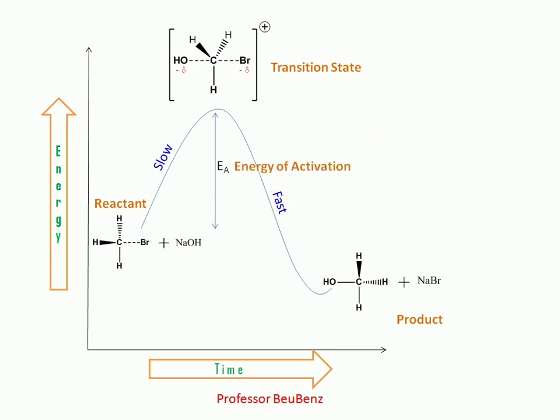Energy required to proceed for the reaction is the difference between the energy of reactant and transition state. The difference between energy of product and reactant is called the internal energy of the reaction, the reaction enthalpy. This is the complete explanation of the energy profile diagram of SN2.